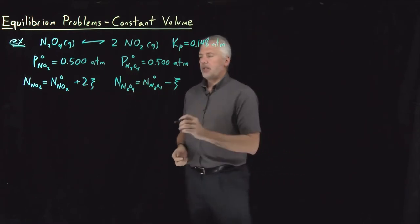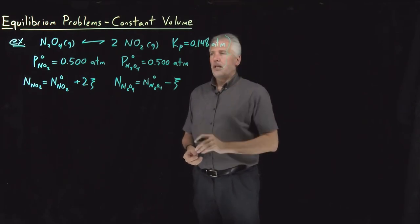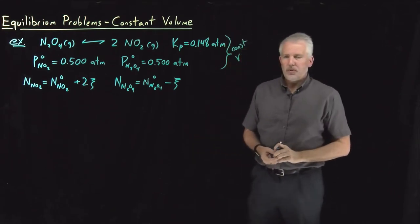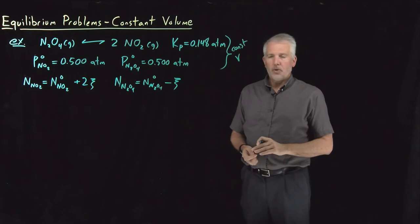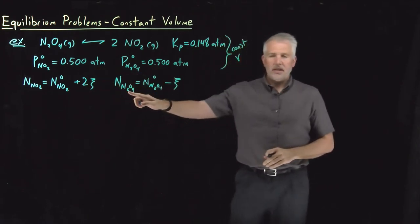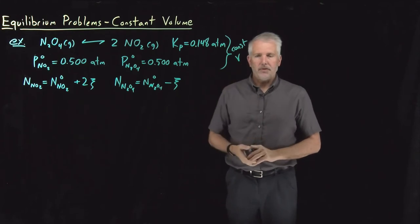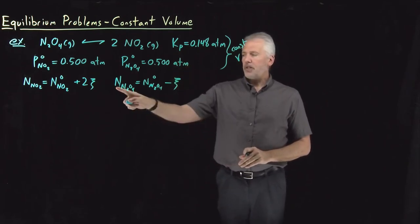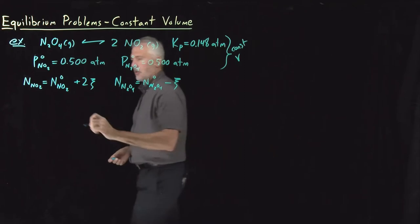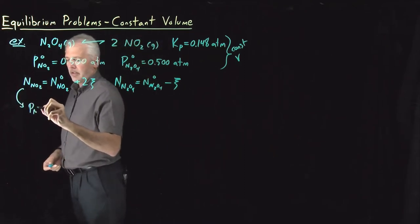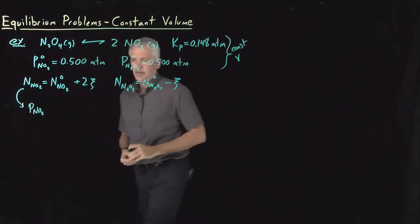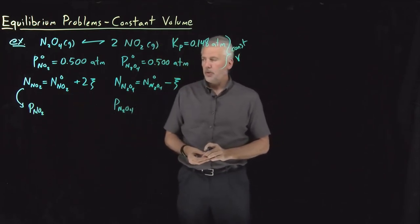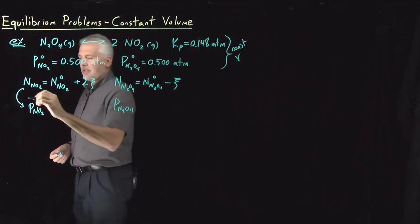N2O4 is a reactant the way I've written the reaction. So when the reaction proceeds in the forward direction, I lose one molecule of N2O4 every time the reaction proceeds. So I can write down how many moles of NO2 and N2O4 I have as a function of the extent of reaction. I don't know the initial number of molecules. I know the initial pressures. So here's the point at which I'll remind us that for this example, we're going to do this reaction at constant volume.